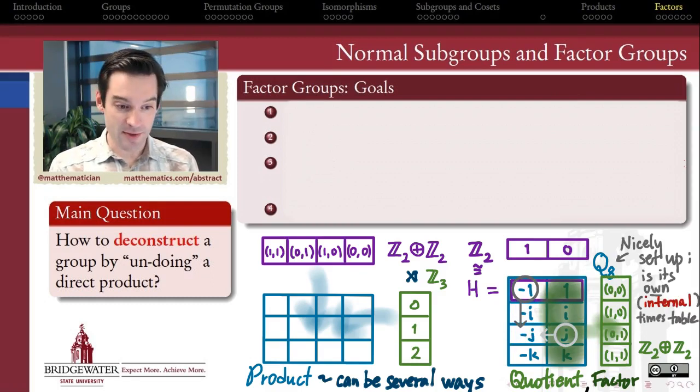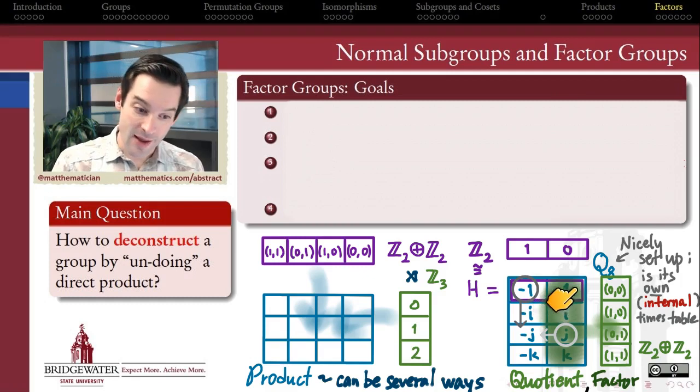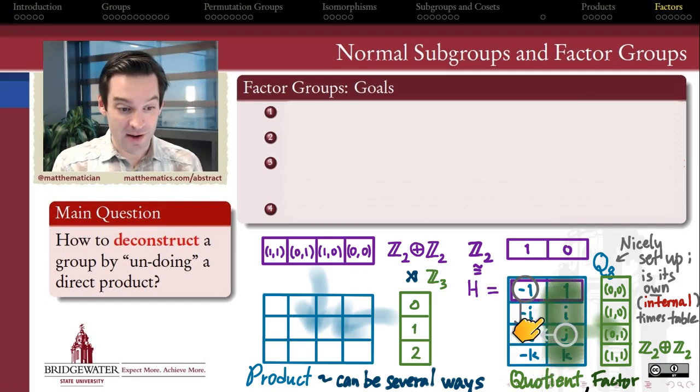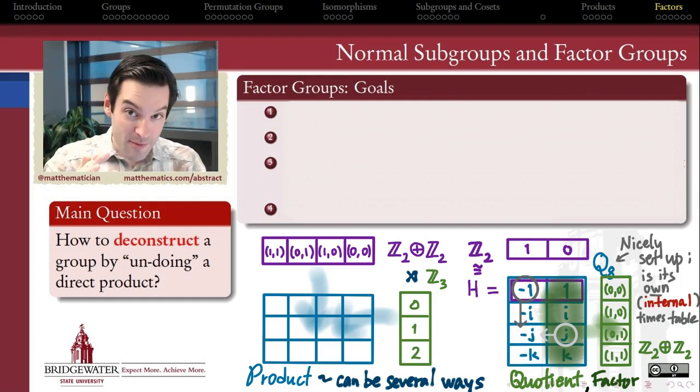So one of the nice things about this particular group of order 8 here is that it has a nice internal structure to it, the way that I've arranged the elements into rows and columns. My subgroup here on the first row and this other group here coming down the first column have this property that if I multiply an element of the first row by an element from the first column, the resulting product is actually on that row and that column in my times table. So this group, I've been able to arrange the elements in this group in a way that forms its own times table in a way.